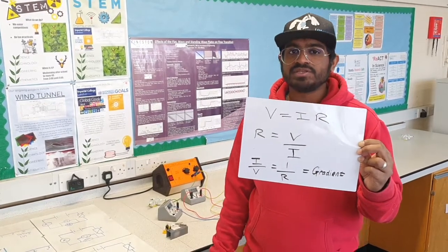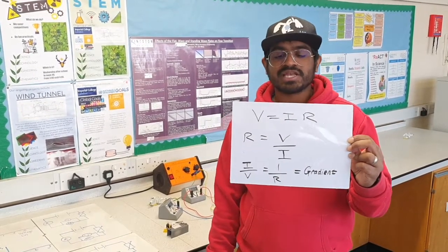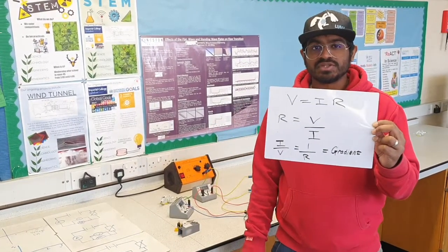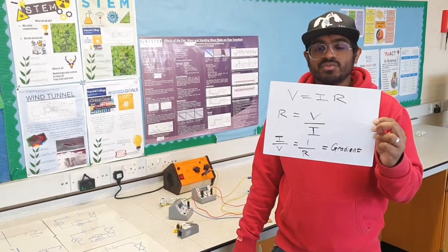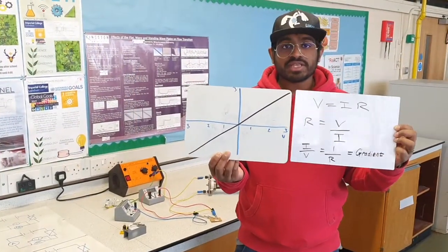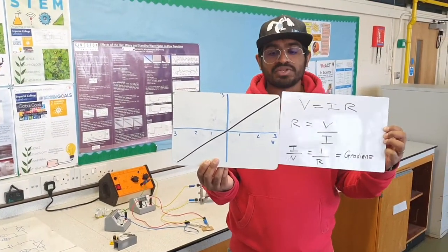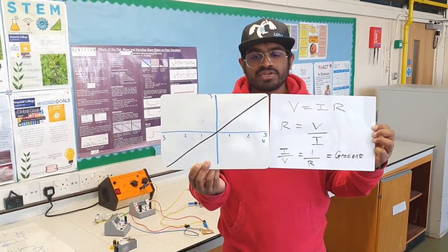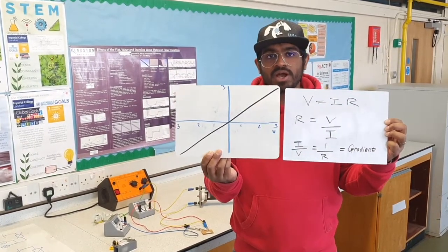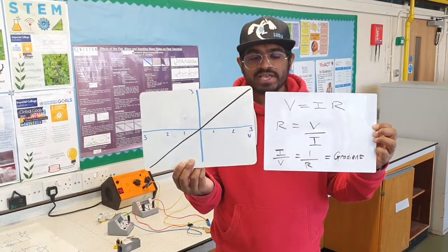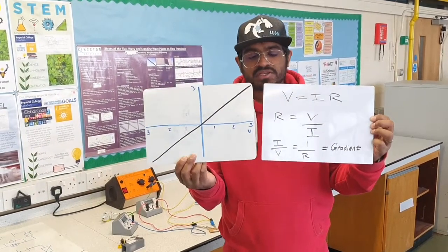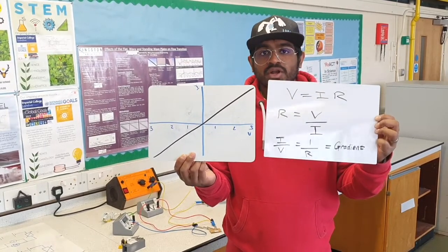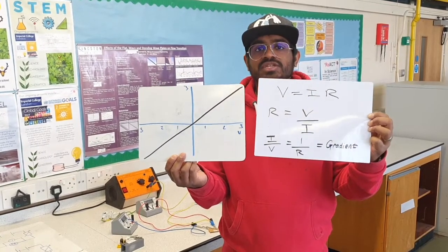In this experiment, you're going to get values of voltage and current. When you plot the graph, you're going to get potential difference on the x-axis and current on the y-axis. In order to find the resistance of this component, we need to find the gradient. So to find the gradient of this graph, we take the difference of y over the difference of x. But we can't finish there because we're going to have I over V. So what we do is calculate 1 divided by the gradient in order to get resistance.